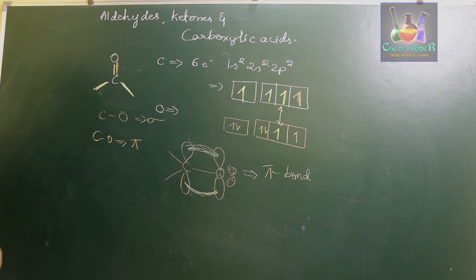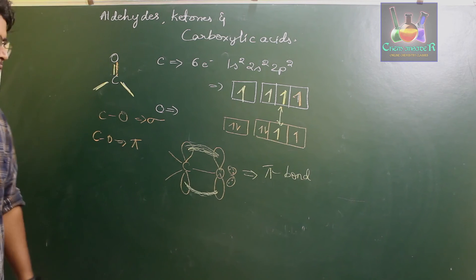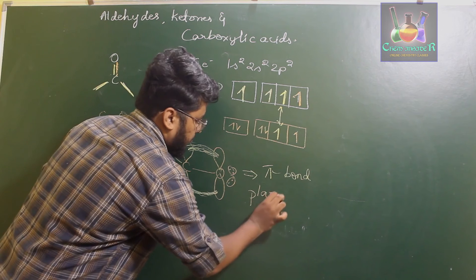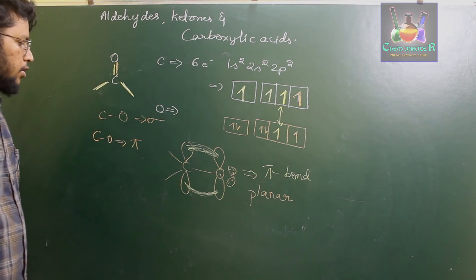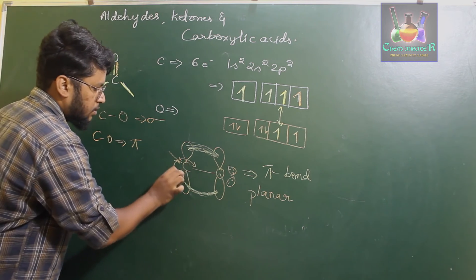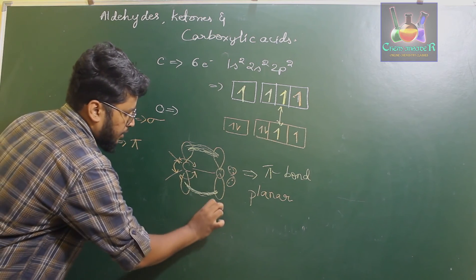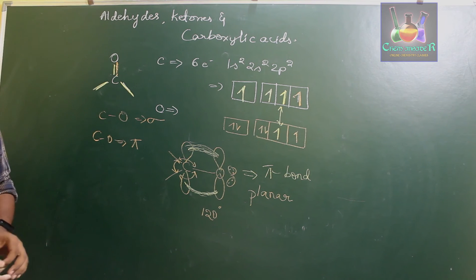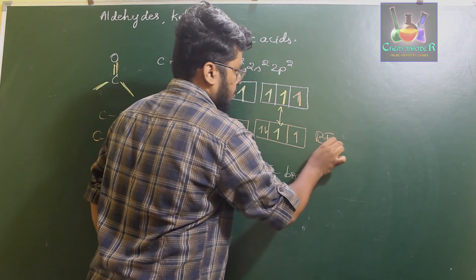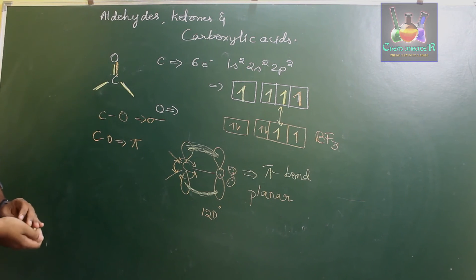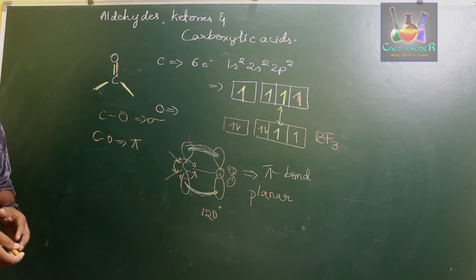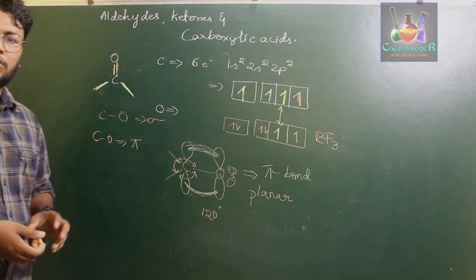Because of the double bond and the lone pairs of electrons on oxygen, the entire carbonyl group is planar in geometry. The bond angle between the three bonds around the carbonyl carbon is exactly 120°, which is characteristic of trigonal planar geometry — similar to boron trifluoride. This is how the structure of the carbonyl group is formed.